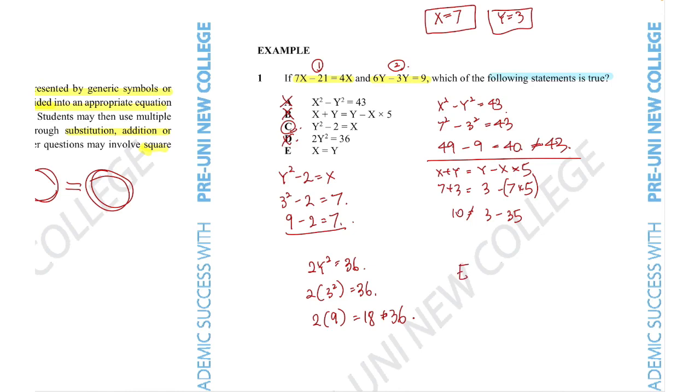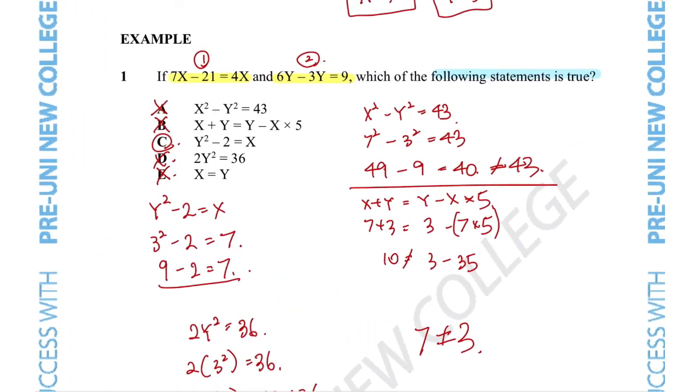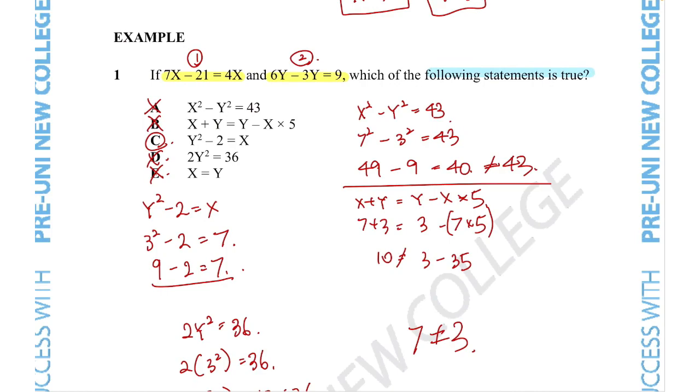And finally, does x equal to y for option E? We definitely know that's not true. 7 does not equal 3. So we can quite confidently say that option C was the only correct answer.